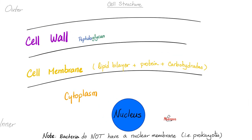The cell wall is made of peptidoglycan. The cell membrane is a phospholipid bilayer — very important. It also contains proteins and carbohydrates. Then you have the cytoplasm and nucleus. Easy peasy.